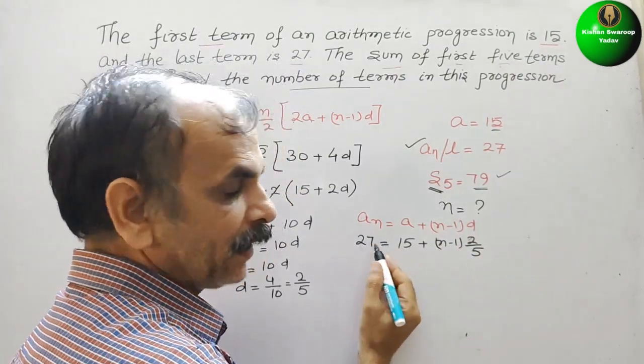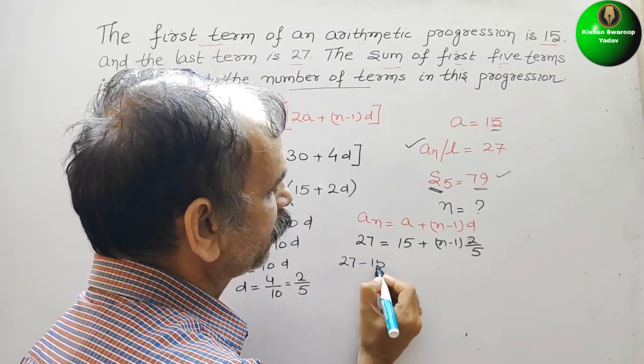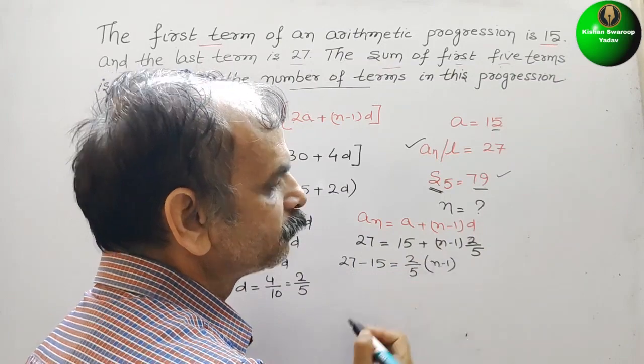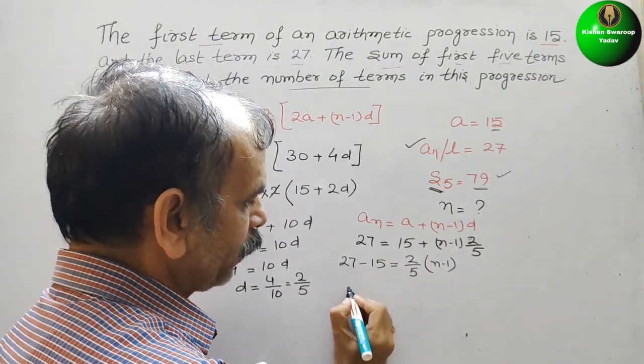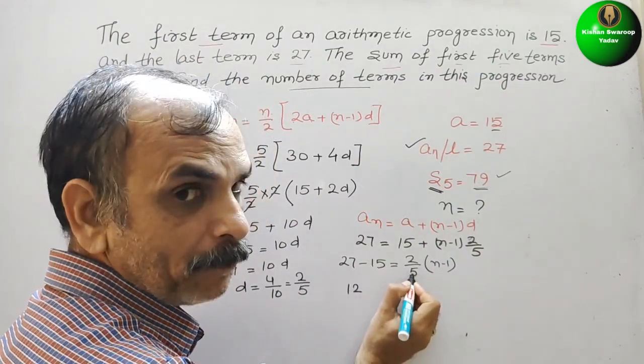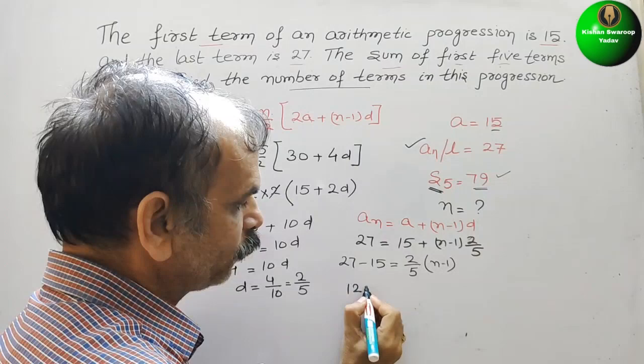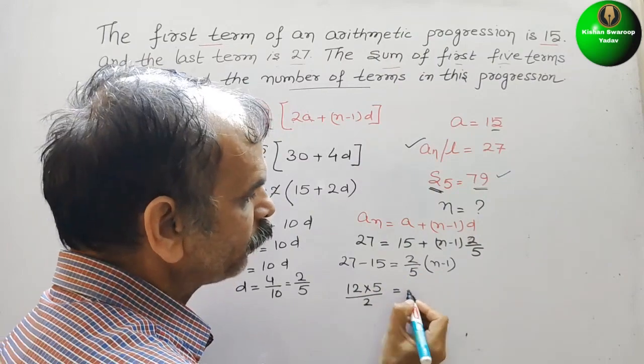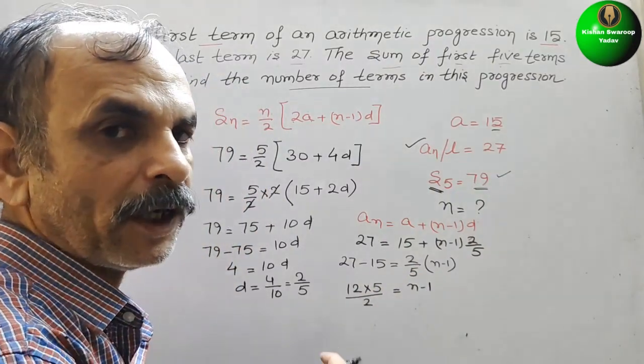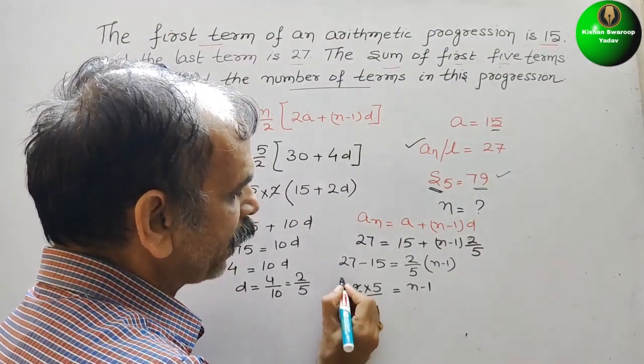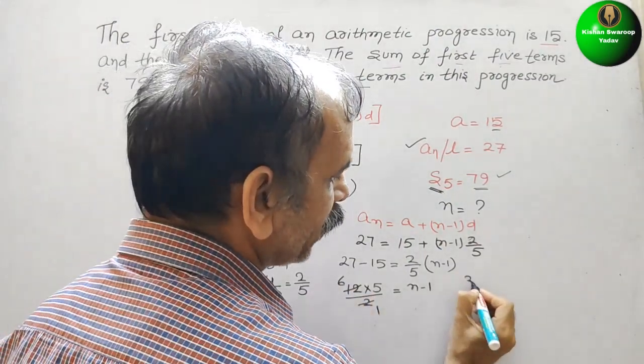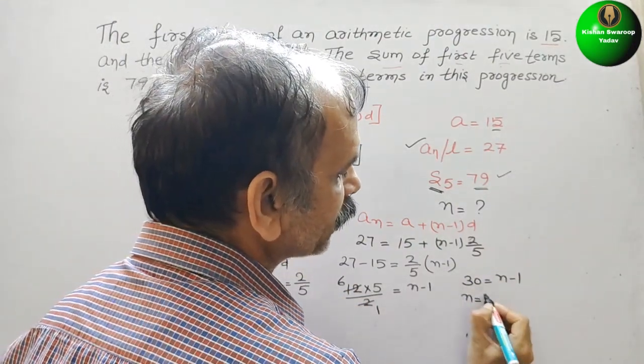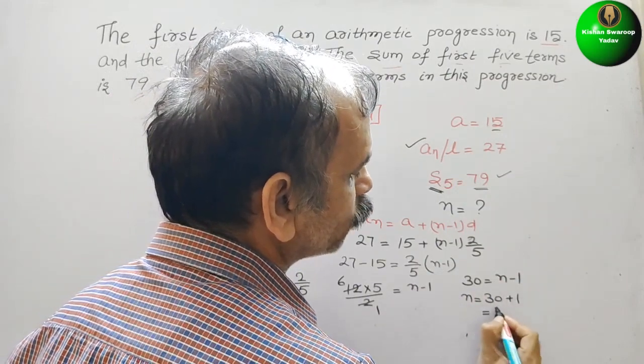Bring 15 to this side, it will be 27 minus 15, that is equal to 2 by 5, n minus 1. So this will be 12. Cross multiply, so it will be 5, and this 2 will come down. So it will be 30 is equal to n minus 1. So what is your n? N is 30 plus 1, that is equal to 31.